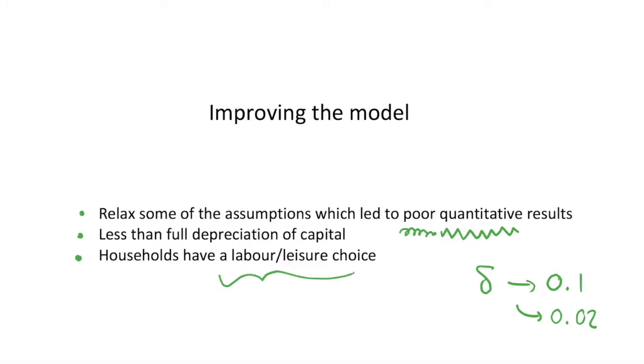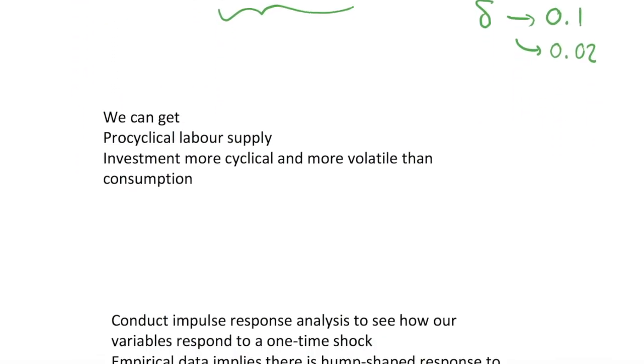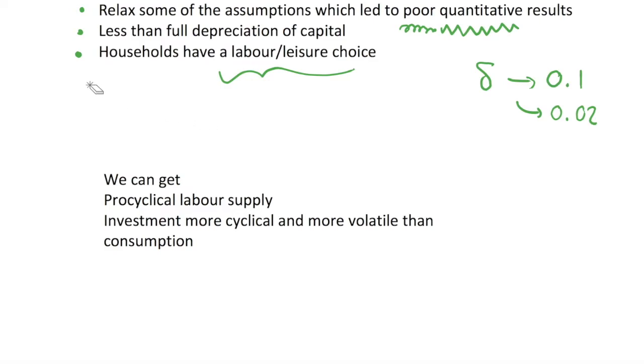There's been lots of estimations empirically in economic papers that have estimated how much capital depreciates. We can also add in a labor-leisure choice. By doing that, we get a much more sophisticated model where we have agents maximizing a utility function that comes down to leisure and consumption. When we add these into our model, we can get procyclical labor supply through our labor-leisure choice, and we can also get that investment is more cyclical and more volatile than consumption.